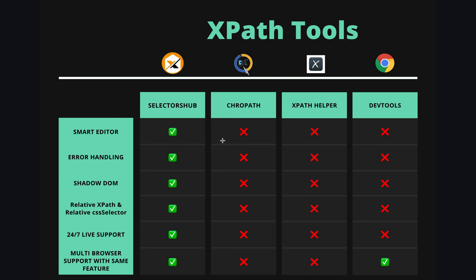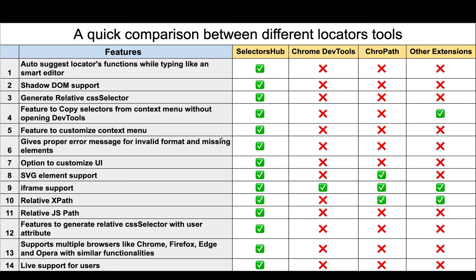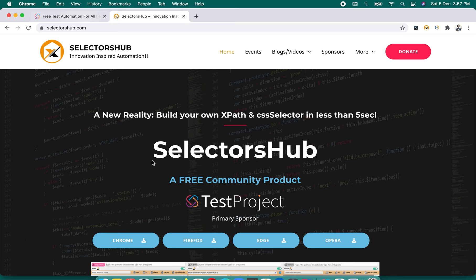Let me give you a high-level view of different tools, and then a detailed comparison. The very first feature is auto-suggest locator functions while typing — like in a smart editor. Which tool helps you write your own XPath? We have Chrome DevTools, CroPath, XPath Helper extension, and SelectorsHub.